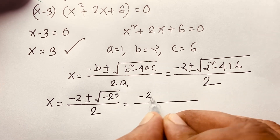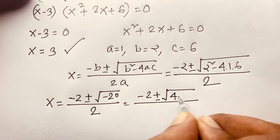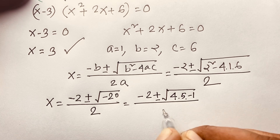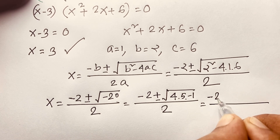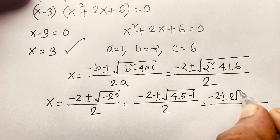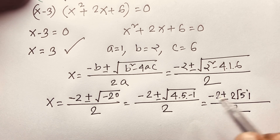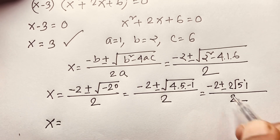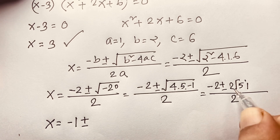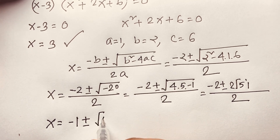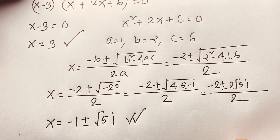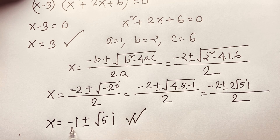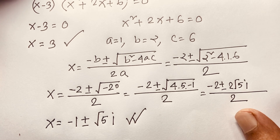We can see this gives a complex solution. Writing negative 20 as 4 times 5 times negative 1, over 2. So we get minus 2 plus or minus 2√5·i, over 2. Since square root of negative 1 equals i, simplifying gives x equals negative 1 plus or minus √5·i. So the complex solutions are x equals negative 1 plus √5·i and x equals negative 1 minus √5·i, and the real solution is x equals 3.